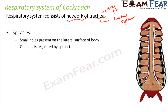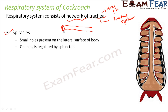The tracheal system has different parts. One important part is the spiracles — small holes present on the lateral surface of the body. These spiracles open to the outside air, just like how we have nostrils. So the cockroach takes in air through these spiracles, and this air then reaches the trachea.